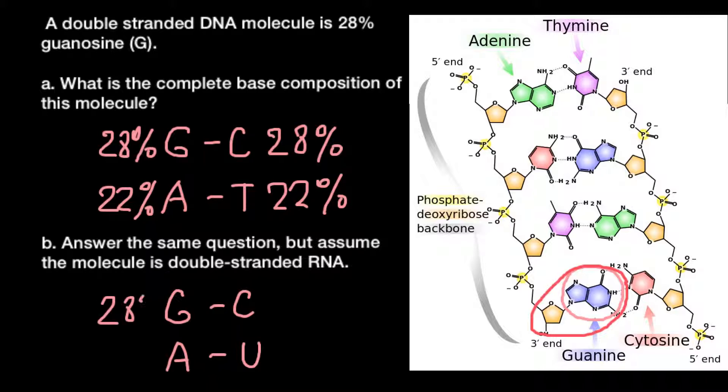If we have 28% guanine, that means we have 28% cytosine and the rest would be adenine and uracil, or 22% adenine and 22% uracil. This is all for today. Thank you for your attention.